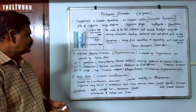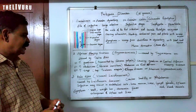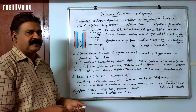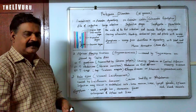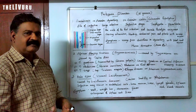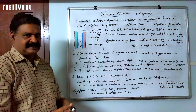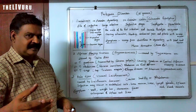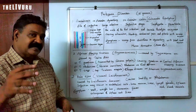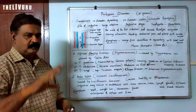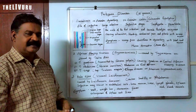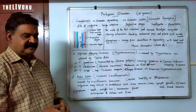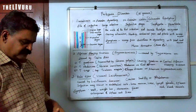So we have covered amoebiasis, African sleeping sickness, and kala-azar. The next one is malaria, which has four types. Its life cycle and how to control it will be discussed in a separate video.